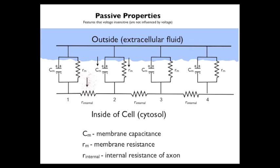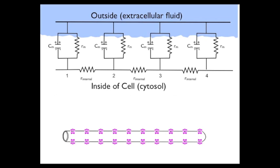The third component is R internal, which stands for the internal resistance of the axon. Now I'd like to explain this using an illustration of an axon shown in the lower part of the figure. I've put in a bunch of channels — they happen to be purple potassium channels, but the kind of channel doesn't really matter. Let's first consider the capacitance.